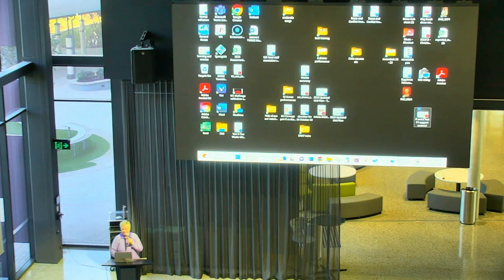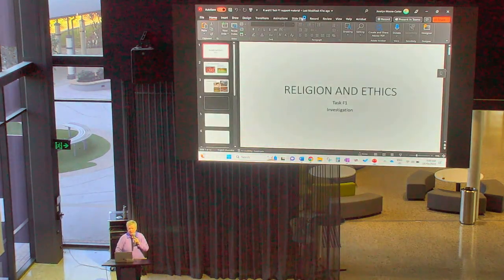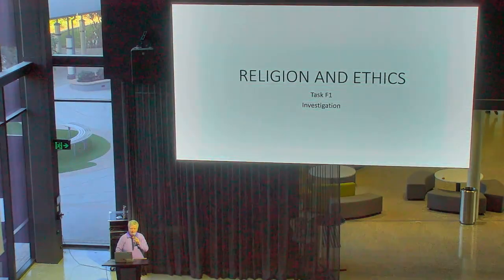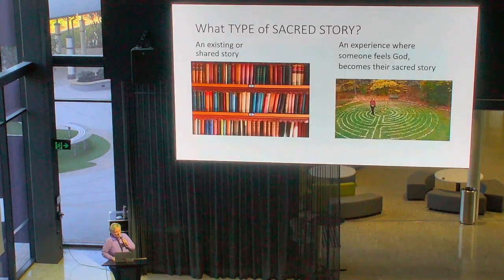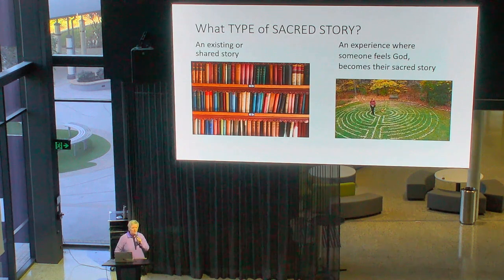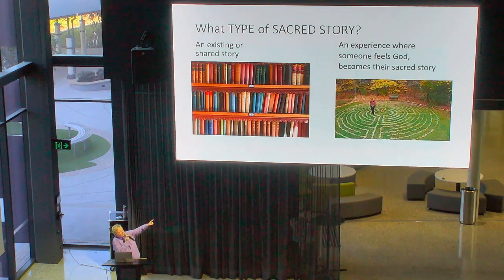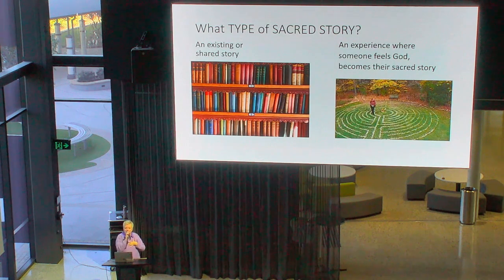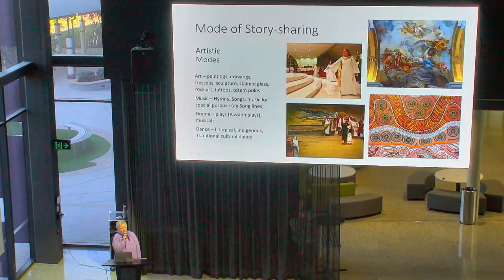Now here's where we get into the possible modes. I'm going to change over to the PowerPoint. So we talked about what type of sacred story — you can either do an existing or shared story, like from a book, or an experience where someone feels like they are getting close to God. That picture of the person walking around the round thing is called a labyrinth — a Christian thing like a maze where you walk around it and at different points you can pray or meditate, to enhance your relationship with God.